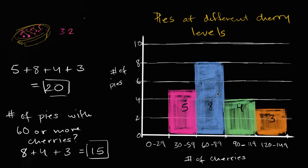So using this histogram, we can answer a really interesting question. We can say, well, how many more pies do we have that have 60 to 89 cherries than 120 to 149 cherries?